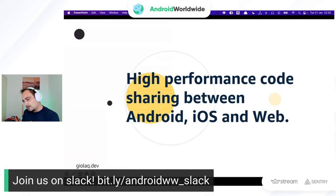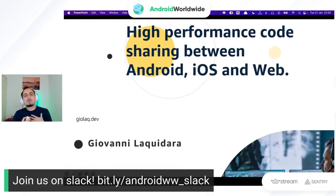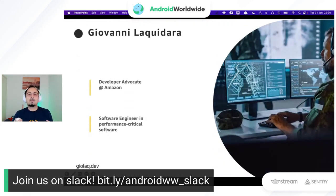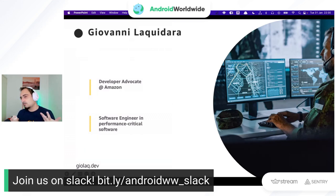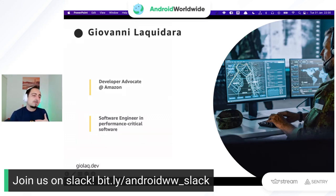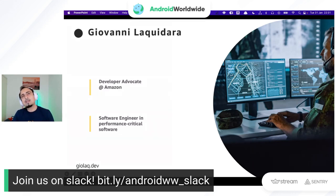Before talking about the topic, I want to present myself. I'm Giovanni Navidara, a developer advocate at Amazon for the App Store and services. Before going deep into developer advocacy, I was a software engineer — a mobile engineer in the Android field — and before that, when I was working in Italy, I was a software engineer in performance-critical software, developing for the space and defense field.